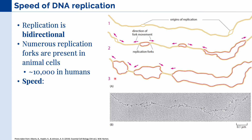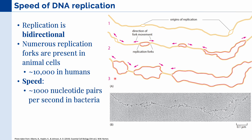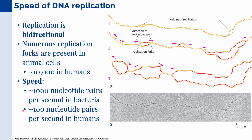The speed of replication can also differ between different organisms. For example, in bacteria, there can be as many as 1,000 nucleotide pairs per second being added to our template DNA, while in humans it is not as fast, at 100 nucleotide pairs per second.